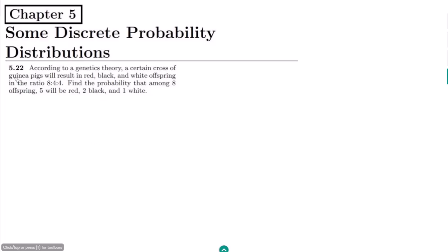Welcome. So this is question 5.22 of chapter 5. The statement of this question is: according to a genetics theory, a certain cross of guinea pigs will result in red, black, and white offspring in the ratio of 8:4:4. Find the probability that among 8 offspring, 5 will be red, 2 will be black, and 1 will be white.